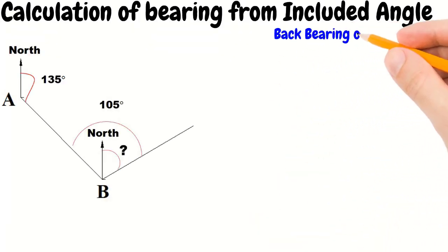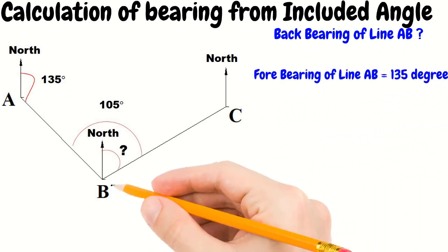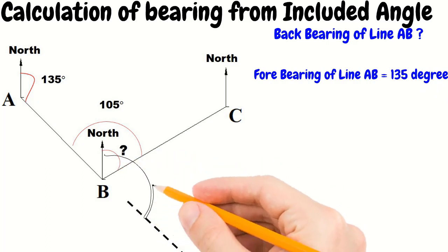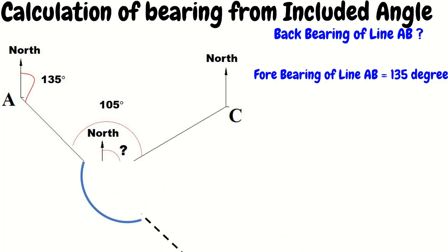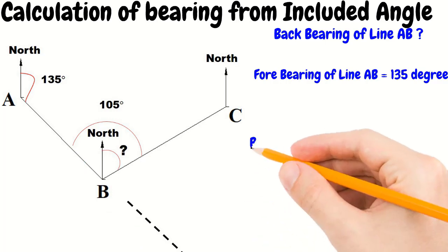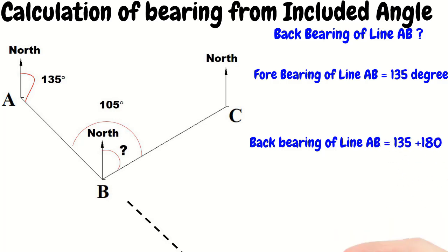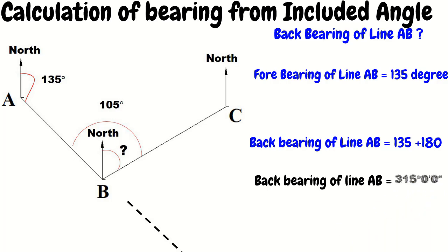First of all, find out the back bearing of line AB. The forebearing is 135 degrees. If we extend line AB as shown by the dotted line, then this 135 degree angle is equal to that one. Adding 180 degrees will give you the back bearing. So the back bearing of line AB is equal to 135 degrees plus 180 degrees, which gives us 315 degrees, 0 minutes, and 0 seconds.